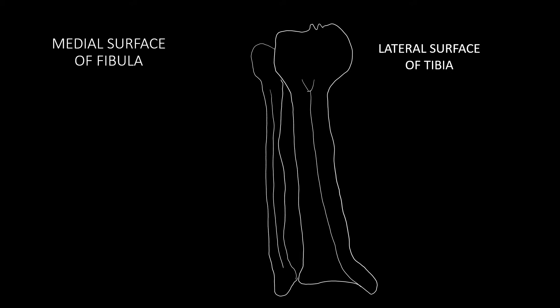Now let's see how to remember the origin of these muscles. The lateral surface of the tibia is divided into an upper two-thirds and a lower one-third. The only muscle originating from the tibia is tibialis anterior, and it is attached to the upper two-thirds of the lateral surface of the tibia.